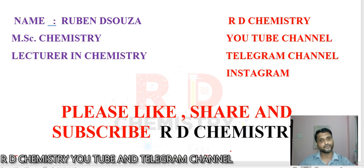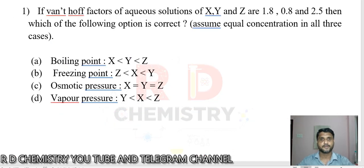Let us start now. Question number one: If van't Hoff factors for the aqueous solution of X, Y, Z are 1.8, 0.8, 2.5, then which of the following option is correct, assuming equal concentration in all the three cases?